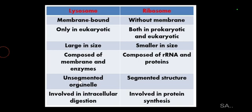If you consider the structure of lysosomes, it is an unsegmented organelle. Ribosomes, however, are a segmented structure — they contain a large subunit and a small subunit, so there are two segments in ribosomes.